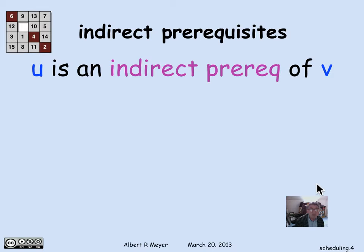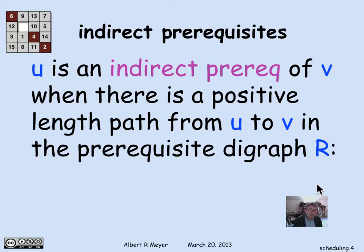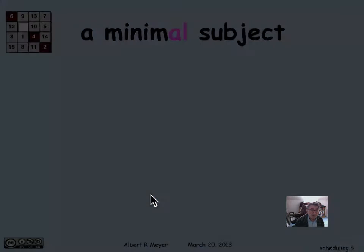So 6.042 is an indirect prerequisite of 6.840. So in terms of graph language and path language, a subject u is an indirect prerequisite of v when there's a positive length path from u to v in the digraph that describes the prerequisite structure among the classes. It simply means, using our notation for r plus is the positive length path relation of a digraph r, a binary relation r. It simply means u r plus v, which is read as there is a positive length path from u to v.